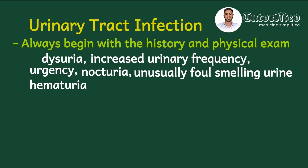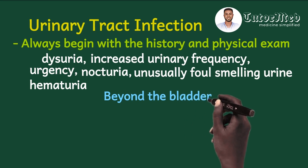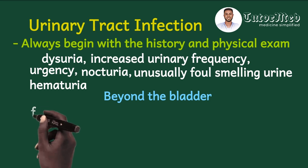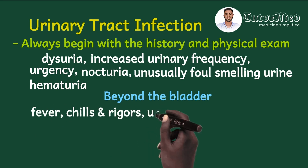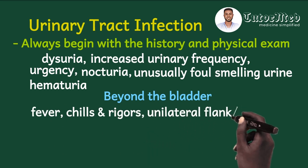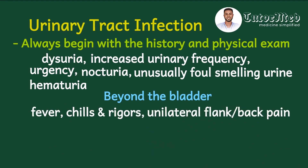Sometimes there is also hematuria. Look for symptoms that suggest the infection may have spread beyond the confines of the bladder — known as complicated UTI. Symptoms like fever, chills and rigors, and unilateral flank or back pain typically point to acute pyelonephritis.